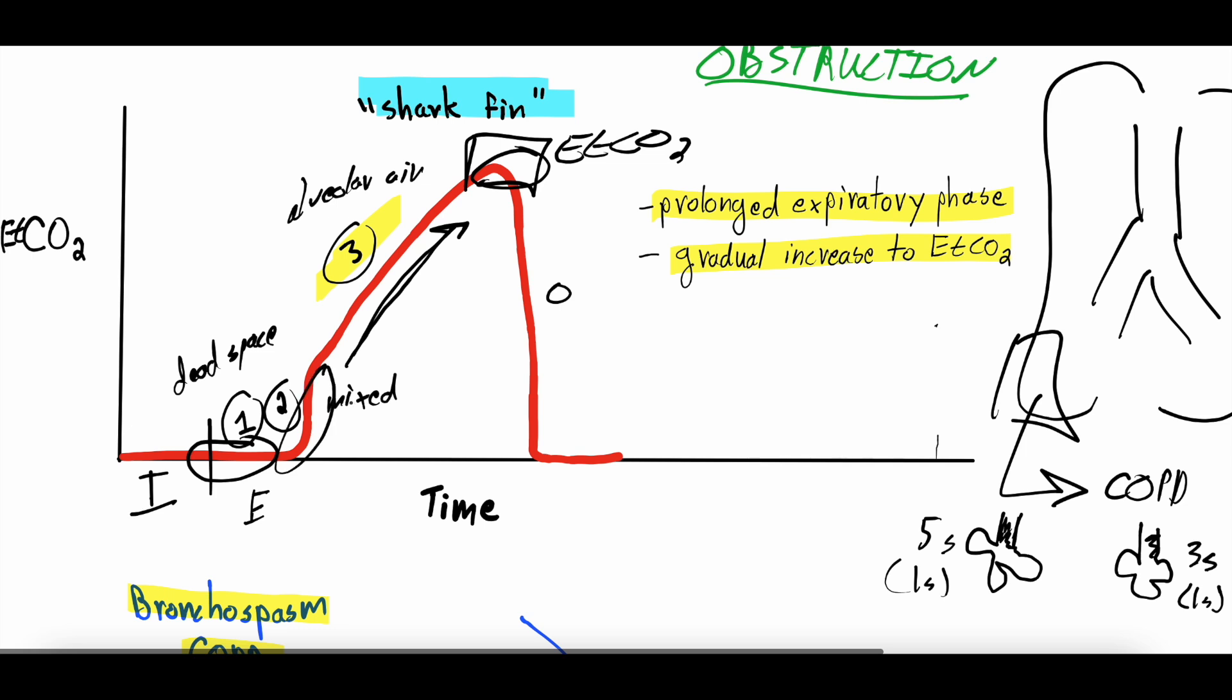But in obstruction, you have areas with obstruction that kind of empty the alveolar air more slowly. So here you have the dead space. Here it starts to be mixed air. And this mixed air persists, right? Because you get some alveoli that are emptying in one second, some that are emptying in three seconds, and the rest of them empty in five seconds until you finally get to pure alveolar air at the shark fin peak. Because, again, there's obstruction. It could be asthma or there could be a toy sitting in the trachea where things are not able to get out as quickly. So the mixing is a much more prolonged phase. That's why you get that stereotypical shark fin with obstructive disease.